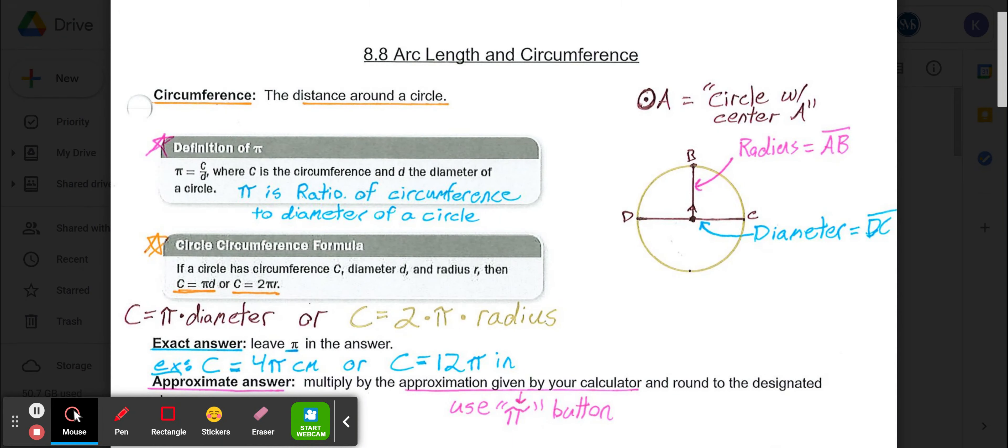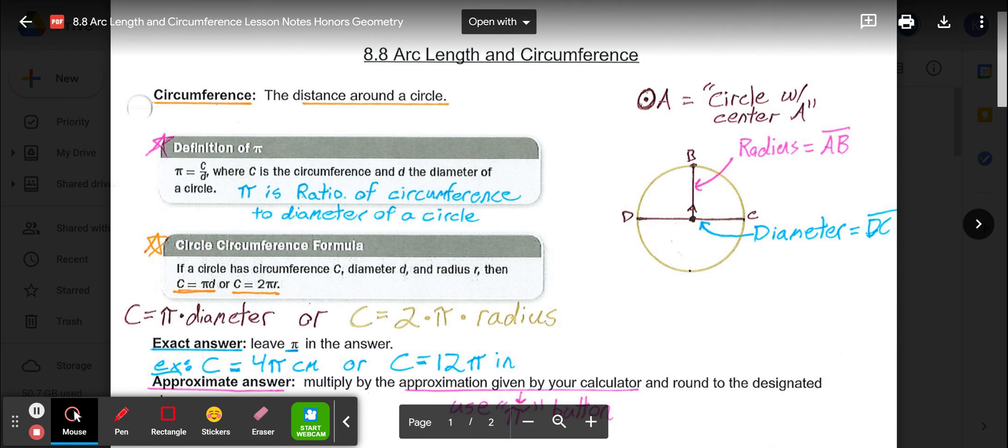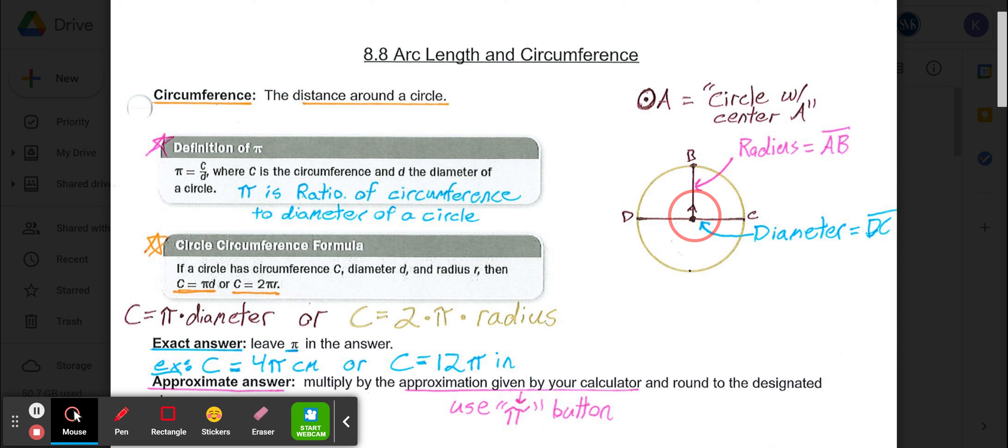Welcome to Lesson 8.8, Arc Length and Circumference. Before we get into any of the terms, I'd like for you to draw yourself a circle with the center point labeled A. Then draw a segment from A to any point on the circle, label that B, and draw a segment all the way through the circle that passes through A connecting two points on the circle. That way we can do a refresher of some terms we'll need to know that we build off of in this lesson.